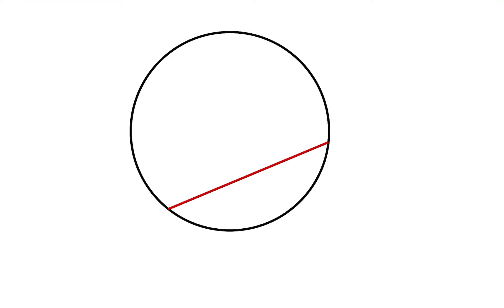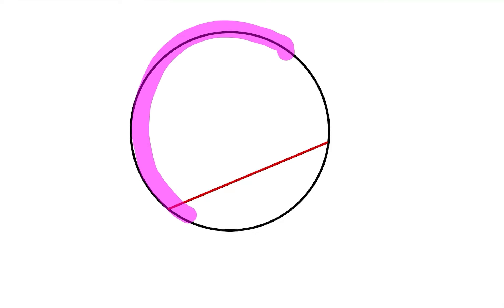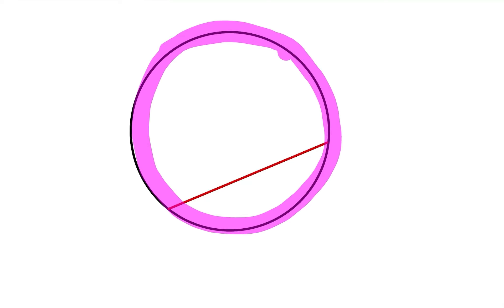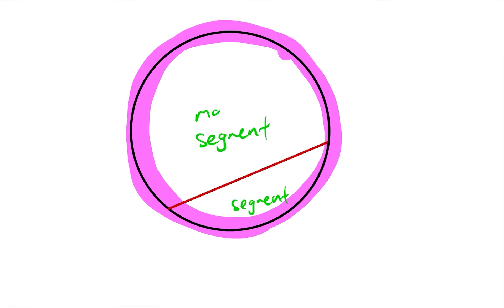So over here I have a circle, and I'm going to draw a chord in it. A chord is basically a line that connects two points on the circumference. The circumference, if you still don't know, is this part where I'm highlighting purple. So now I have two different segments. The one with the larger area we call the major segment, and the one with the smaller area we call the minor segment.